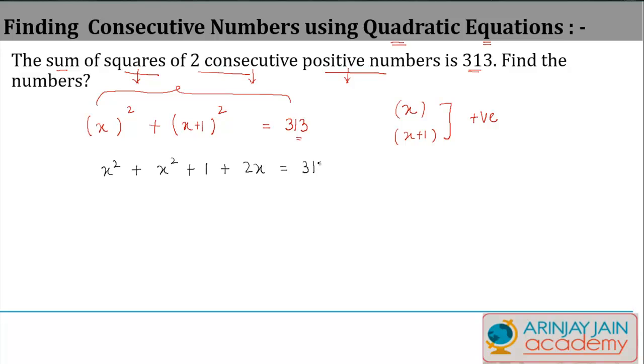In other words, you get 2x² plus, let's take this 2x over here, plus 1 minus 313. If you move this to the other side it becomes minus, is equal to 0.